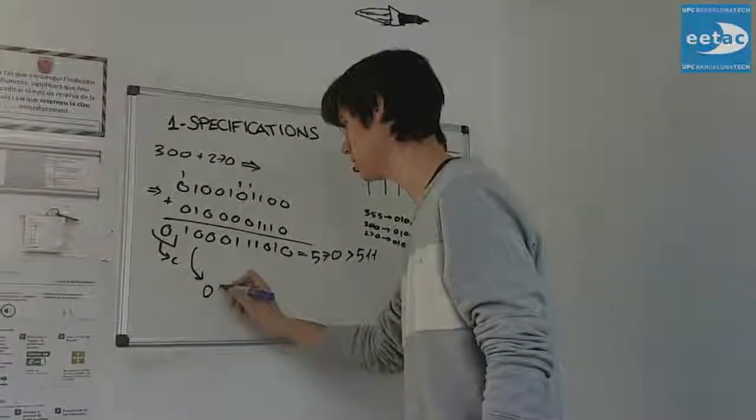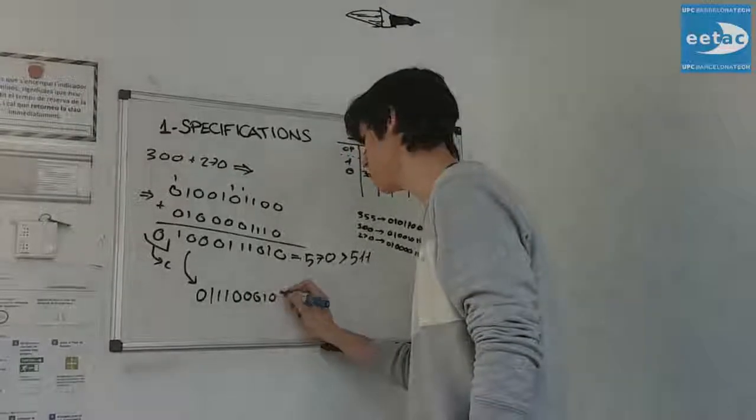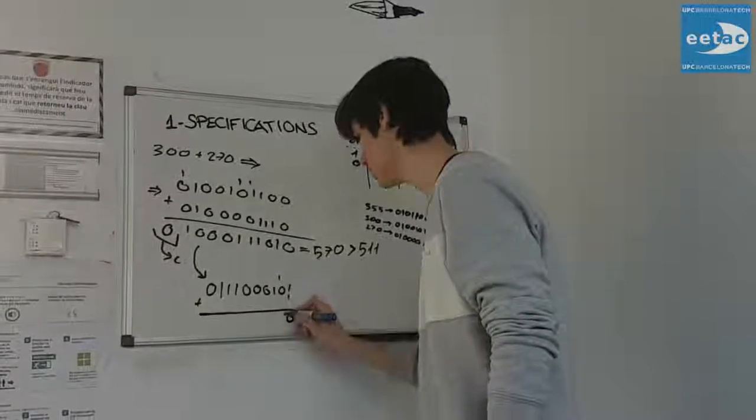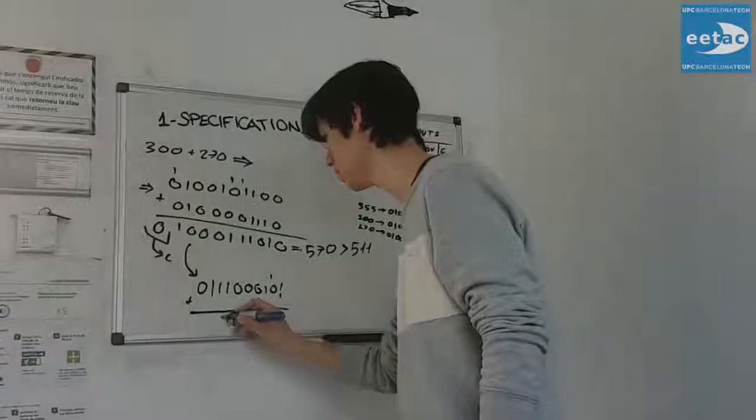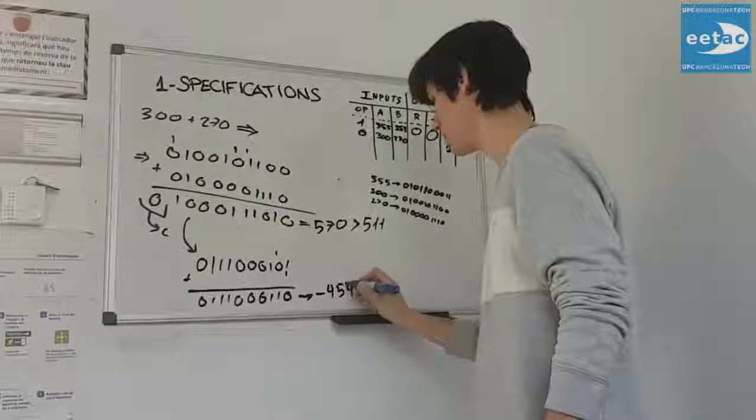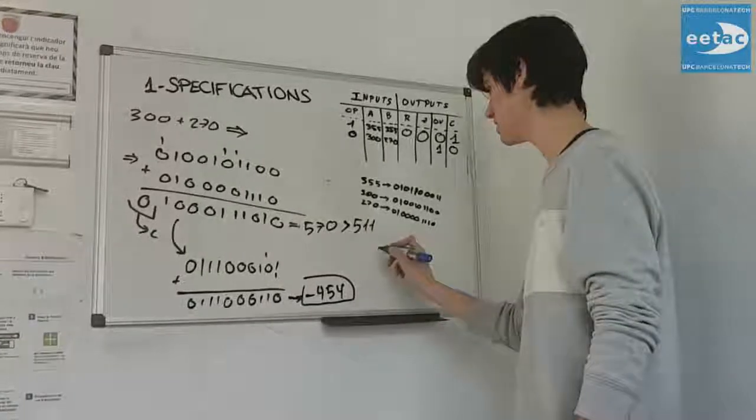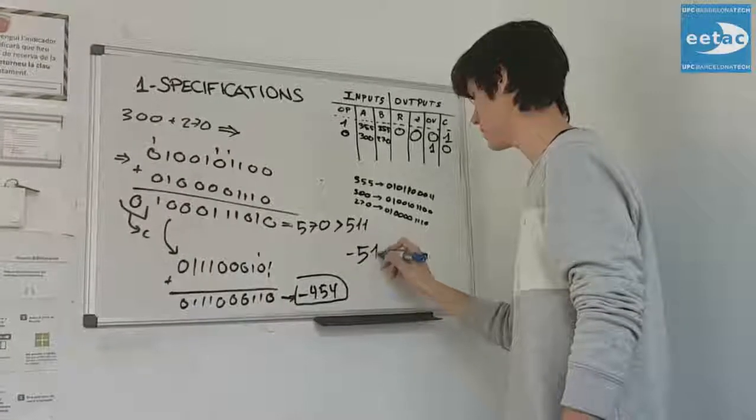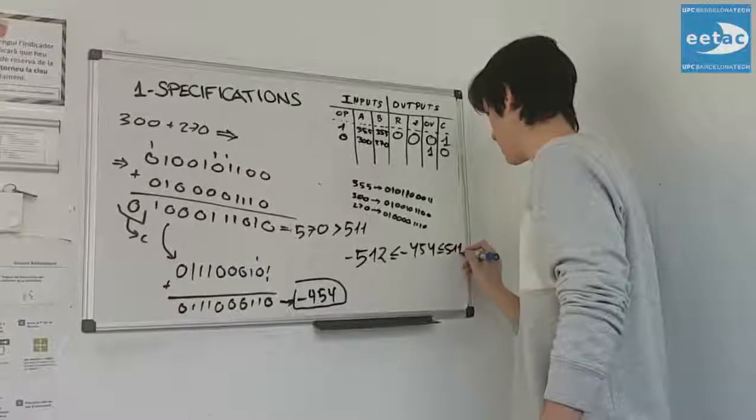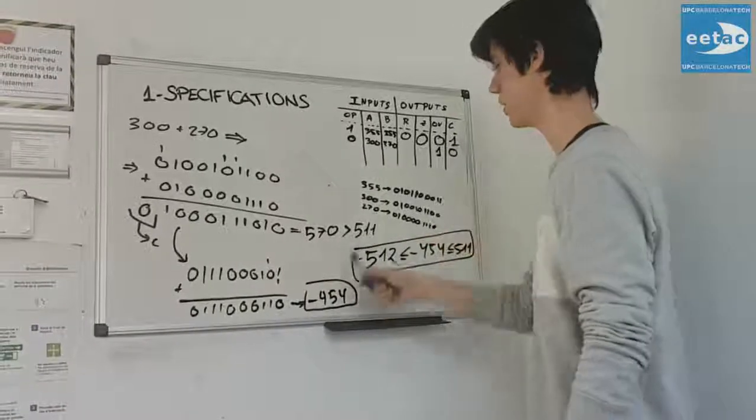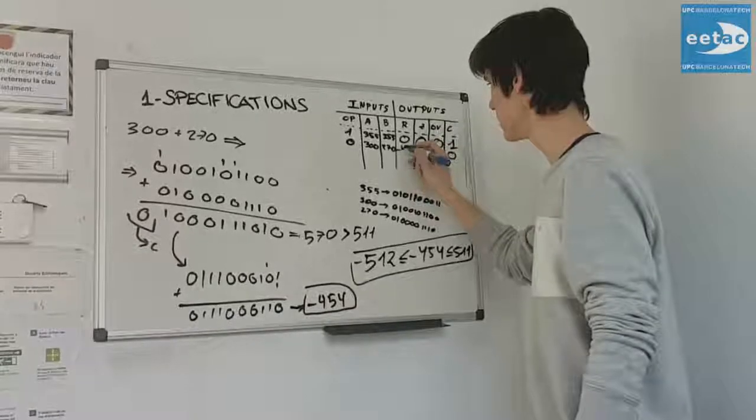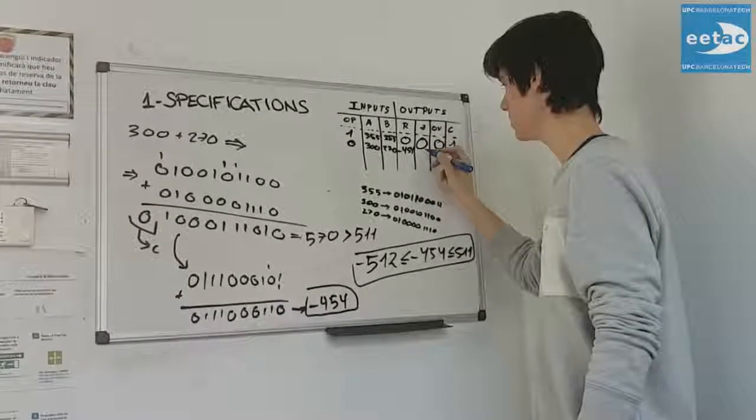Now we invert bit by bit and plus 1. So we have 0111000101 plus 1, and finally we get 0111000110. This number is minus 454. And we can check this is between the range. So we have the correct answer. So result is minus 454 and Z is 0.